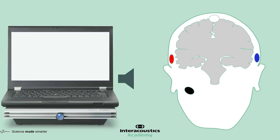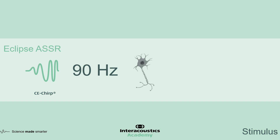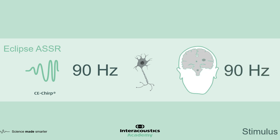Just like any auditory evoked potential, we firstly need to present the stimulus to the patient. Eclipse ASSR utilizes narrowband CE chirps. This stimulus has been proven to provide strong neural responses by accounting for the time it takes the stimulus to travel along the cochlea. To use this stimulus in ASSR testing, we simply present the narrowband CE chirp at a particular stimulation rate, for instance 90 Hz. This method evokes strong, synchronous neural responses at 90 Hz, which are easy to detect by the ASSR response detector.